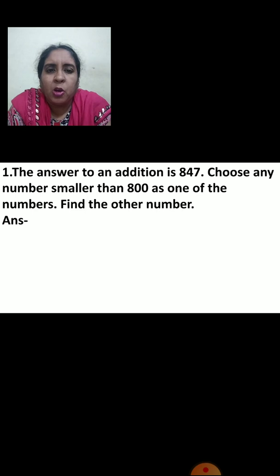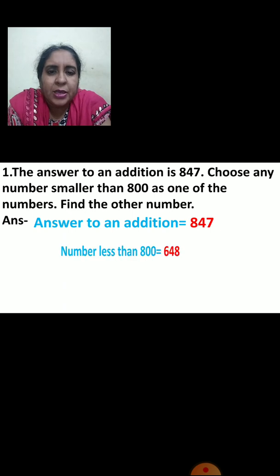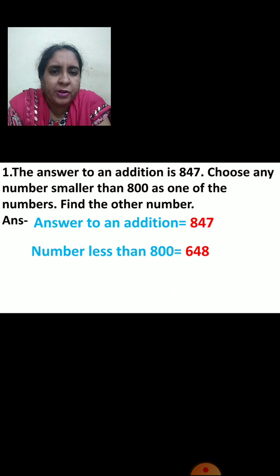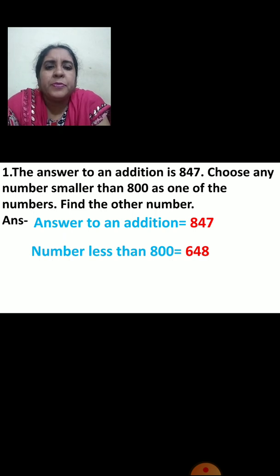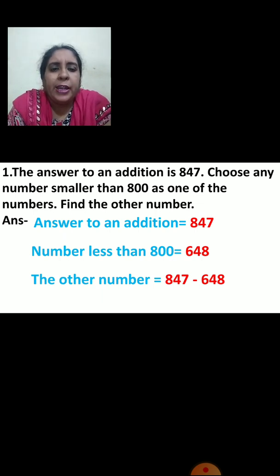Now let us see what will be your first statement. First statement: the answer to an addition is equal to 847. Now let us see your second statement. Number less than 800 — I have taken here 648. You can take any number whichever you like, but it should be less than 800. The other number equals 847 minus 648. Now let us see the working.